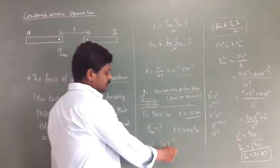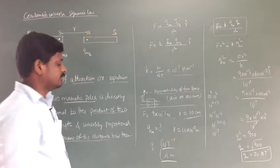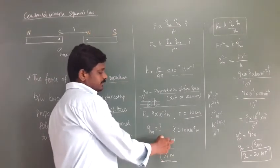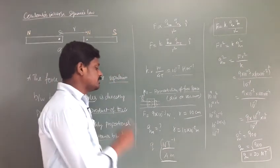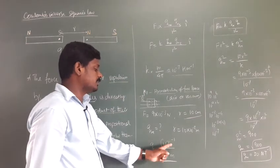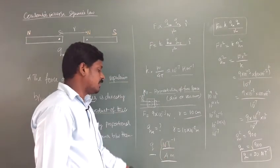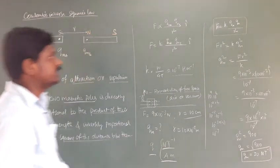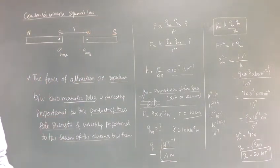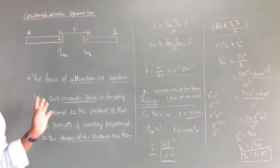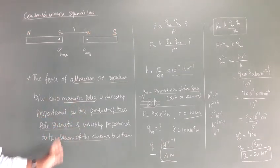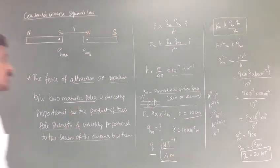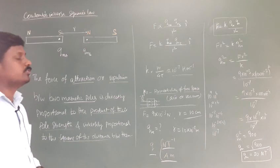The unit of pole strength — that is the strength of the magnetic charge — is Newton per Tesla or ampere meter. Both are the same. They may ask this in a one-mark question. To summarize, in this class we discussed Coulomb's inverse square law in magnetism: the force between two magnetic poles is directly proportional to the product of their pole strengths and inversely proportional to the square of the distance between them. We also solved a problem to find the pole strength. Thank you, students.